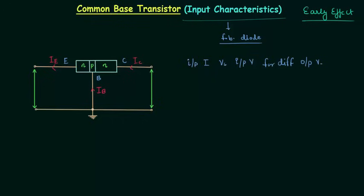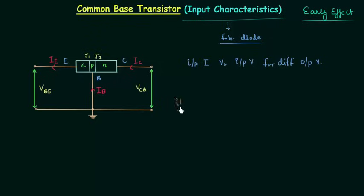I am considering the active mode of operation. So junction J1 is forward biased and junction J2 is reverse biased. This potential difference is equal to VBE. This configuration is called common base because the base is common to both the input side and output side. On the input side, the current is IE and the voltage is VBE.